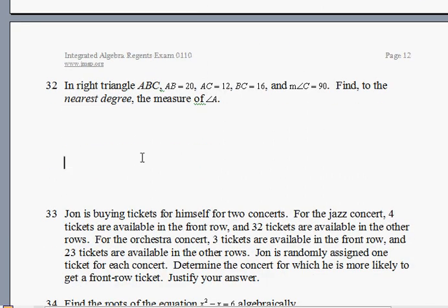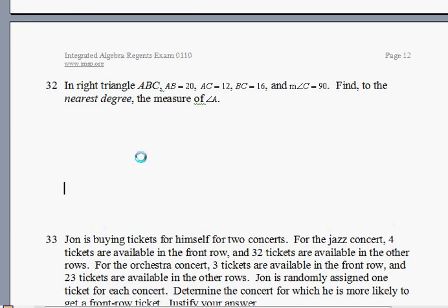Now we have a triangle here and we're looking for a missing angle. Therefore, we're going to use our favorite method, SOH-CAH-TOA. Let's draw the triangle first. AB equals 20, AC equals 12, BC equals 16, measure angle C equals 90. This is a right triangle just because the question says the right triangle, so let's create one.